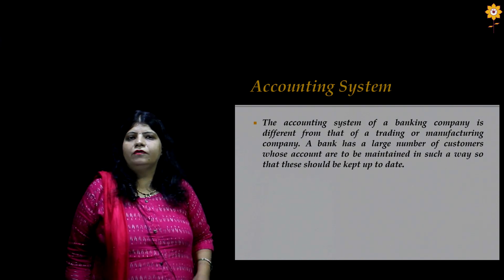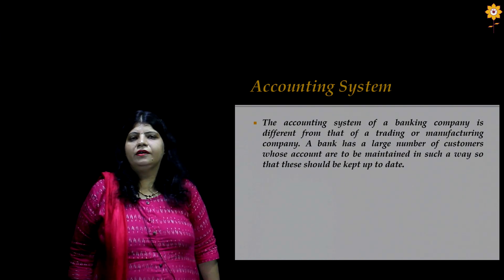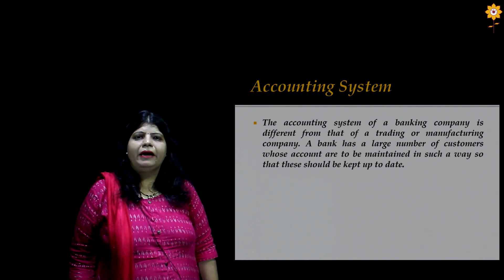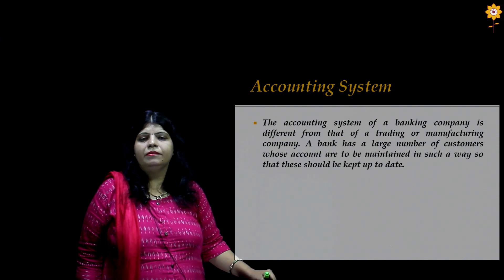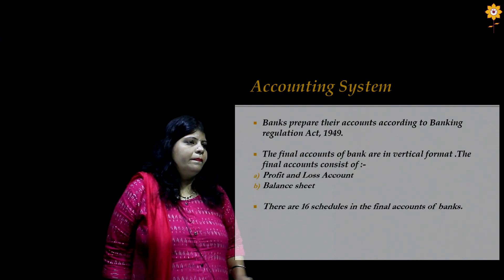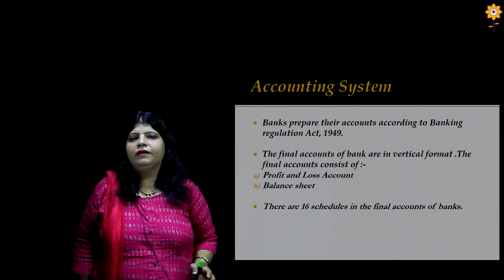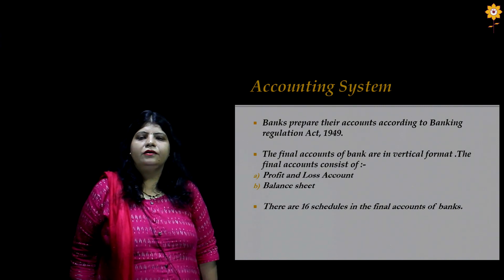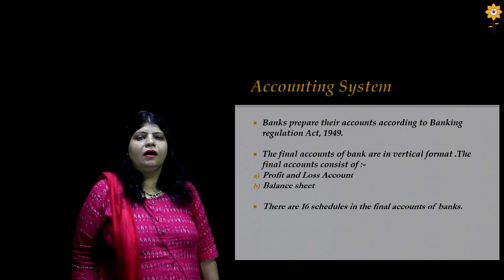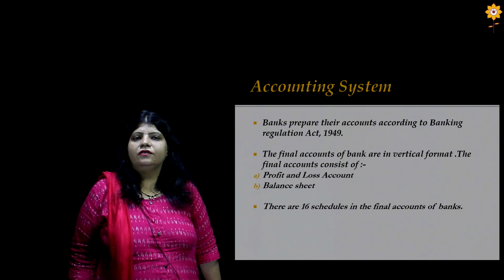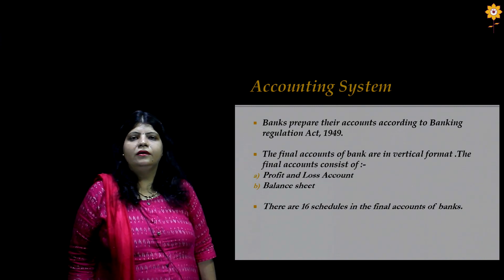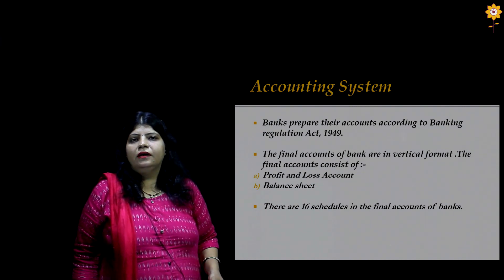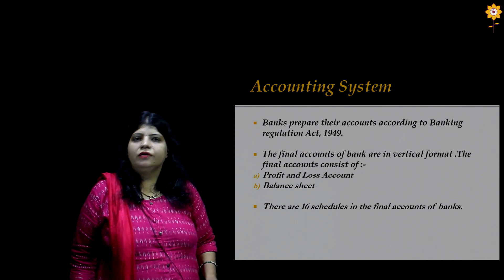Company final accounts for the banking system will be very different from regular company final accounts, and they are governed by RBI and the Banking Regulation Act. Banking companies are not governed by the Companies Act. We will be having a brief and detailed idea about the balance sheet and P&L account. Balance sheet and P&L account of banking companies include 16 schedules, that is from Schedule 1 to Schedule 16, and we will be preparing the final accounts in the vertical format as prescribed by RBI and the Banking Regulation Act.